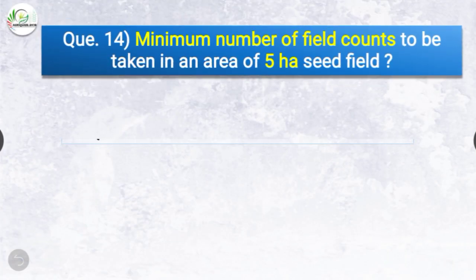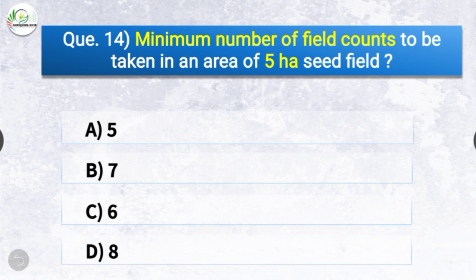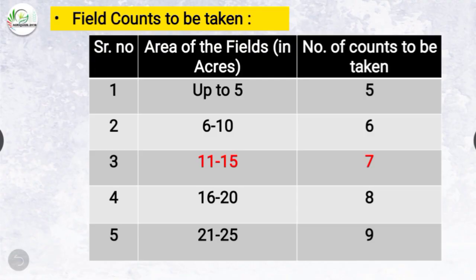Question number fourteen: The minimum number of field counts to be taken in an area of 5-hectare seed field — the options are 5, 7, 6, or 8. The correct answer is option B — 7. For fields up to 5 acres: 5 counts; 6–10 acres: 6 counts; 11–15 acres: 7 counts; 16–20 acres: 8 counts; 21–25 acres: 9 counts.